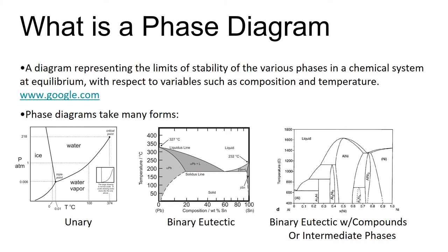A phase diagram is a diagram representing the limit of stability of the various phases in a chemical system at equilibrium with respect to variables such as composition and temperature. And below are the three examples of phase diagrams.